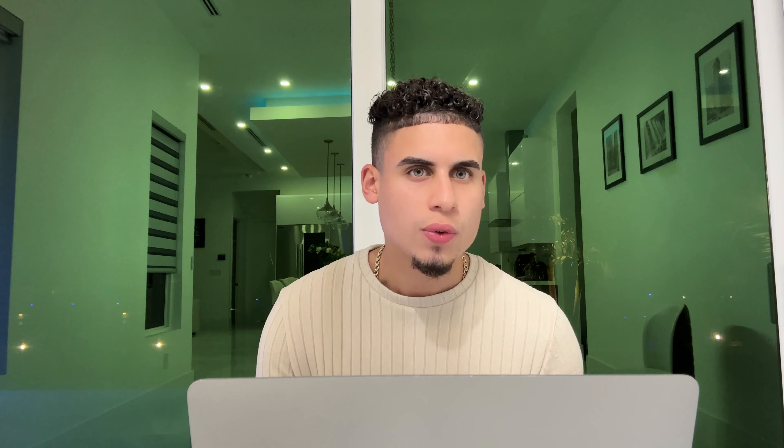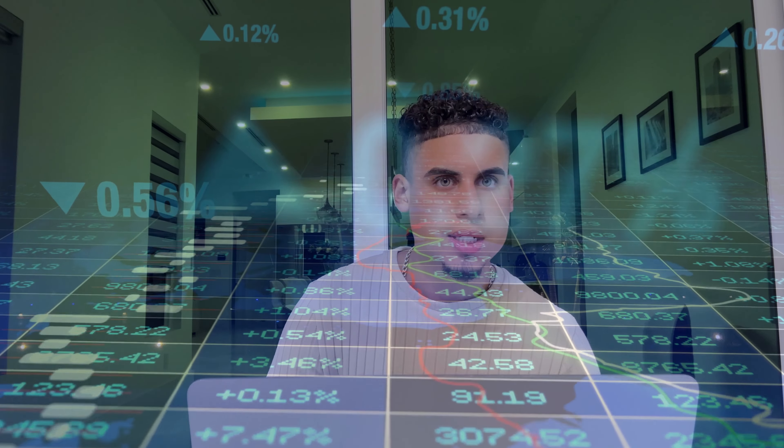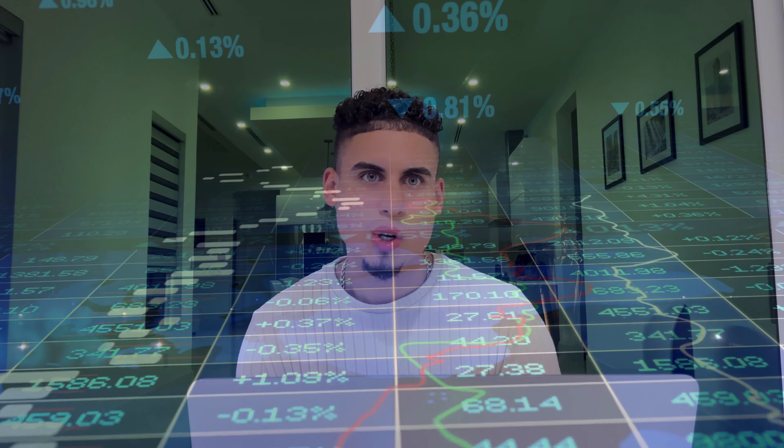So what are stock options? Now that we know we use shares as a long-term tool for investing, what do we use options for? Stock options let us profit from short-term stock price movements — whether prices go up or down. They allow us to capitalize on daily, weekly, and monthly changes in value, making it easier to benefit from short-term trends. When you see Apple, Microsoft, or Nvidia moving five or six dollars, you can take advantage of that move using options.